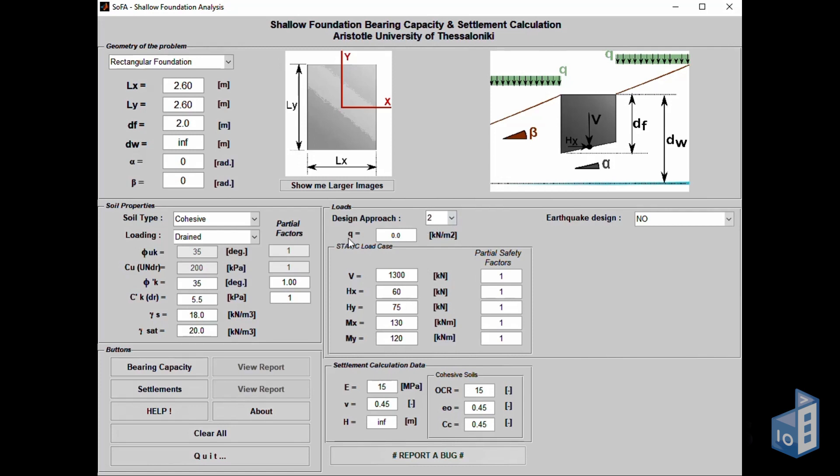Next, surcharge pressure can be determined. In the static load case section, the first input parameter is the vertical force. Horizontal forces are then set for the X and Y directions. Finally, for this section, moments on the X and Y axis can be determined.